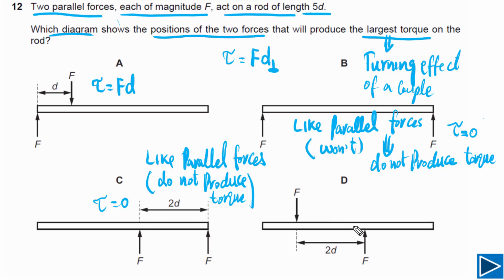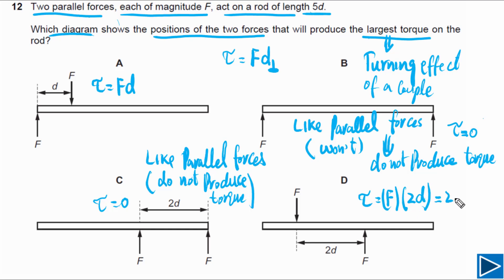For option D, the two forces form a couple: same magnitude, acting in different directions, not along the same line, and separated by a perpendicular distance of 2D. The torque produced by this couple is equal to F times 2D, which equals 2FD. Comparing all options, only A and D produce torque, and D produces the largest torque. So D is the best possible answer.